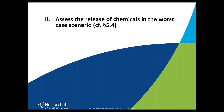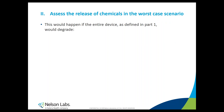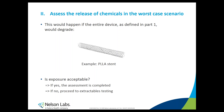In step two, you will assess the release of chemicals in the worst-case scenario, as described in paragraph 5.4 of the final draft. This will happen if the entire device as defined in part one would degrade — obviously the case for biodegradable medical devices. When we speak about the entire medical device, we refer to the bulk material, such as PLLA stent, but also potential residues from manufacturing and from terminal steps such as sterilization. If you cannot demonstrate your device will be safe, you will need to proceed to extractable testing.